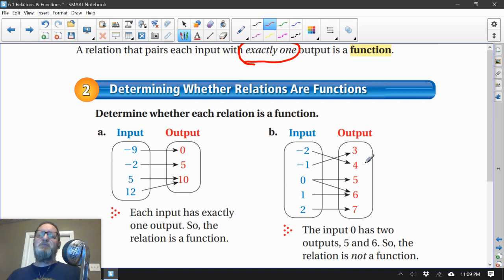Now, this one. Well, negative 2 goes with 4, negative 1 to 3. 0—oh, here's our problem. 0 is not only going to 5, but it's also going to 6. Do you see how that breaks the rule? The input must have exactly one output. This input, 0, has two outputs. The input 0 has two outputs, 5 and 6. So the relation is not a function. But to be clear, both of these are called relations. But the new thing here is to be called a function, the input must have one output.